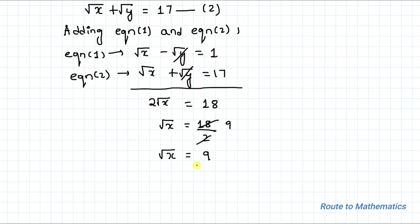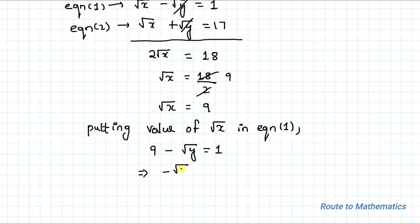Now putting this value of root x in equation 1, we have 9 minus root y equals 1. This implies minus root y equals 1 minus 9, that is minus root y equals minus 8. The negatives cancel out, so we have root y equals 8.